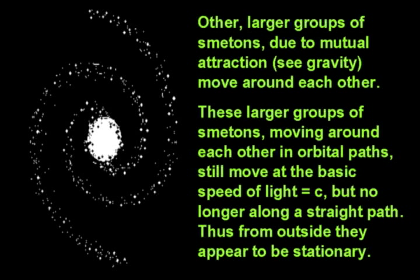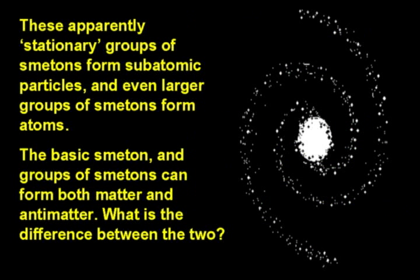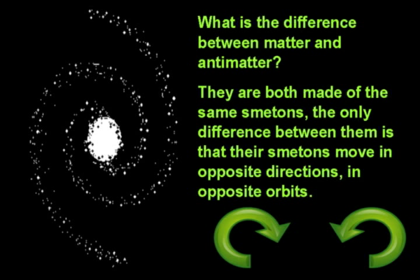Thus, from the outside they appear to be stationary. These apparently stationary groups of SMETONs form subatomic particles, and even larger groups of SMETONs form atoms. The basic SMETONs and groups of SMETONs form both matter and antimatter. What is the difference between the two? They are both made of the same SMETONs. The only difference between them is that their SMETONs move in opposite directions, in opposite orbits.